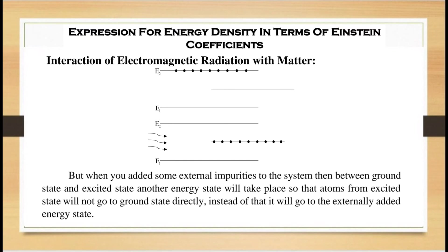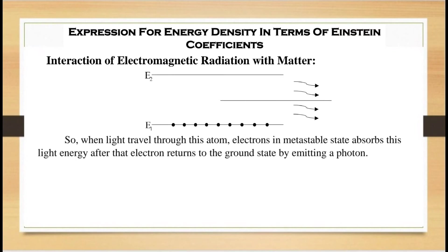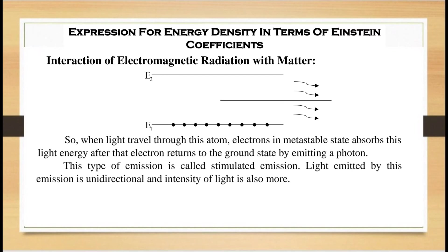Electrons in this metastable state are not as stable as in the ground state and not as unstable as in the excited state. When light travels through this atom, electrons in the metastable state absorb the light energy and then return to the ground state by emitting a photon. This type of emission is called stimulated emission. The light emitted is unidirectional and of greater intensity — laser light is obtained by stimulated emission only.